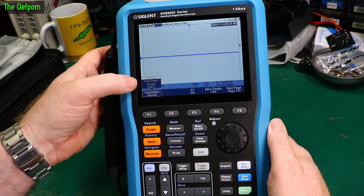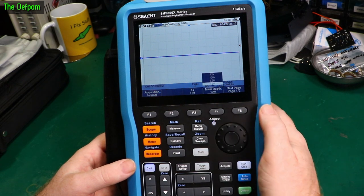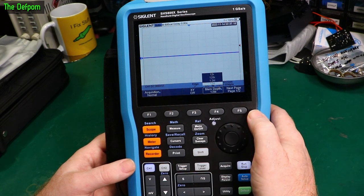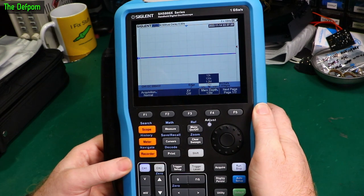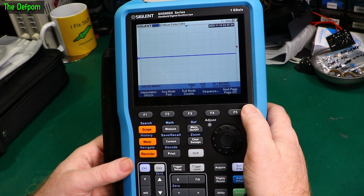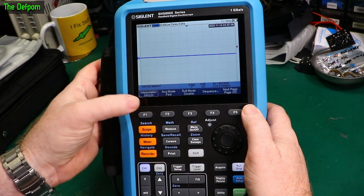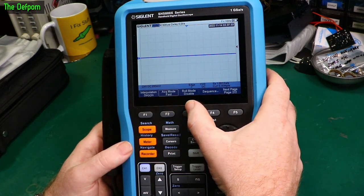Acquire menu. Acquisition normal. Peak detect, average and e-res. XY mode. Memory depth. It's got 12 meg down to 12k, or 12 meg to 12k I should say, or 12k to 12 meg, whichever way you want to think about it. Next page. Interpolation. X or sine x over x. Acquisition mode. Fast or slow. Roll mode. Disable. Sequencing.